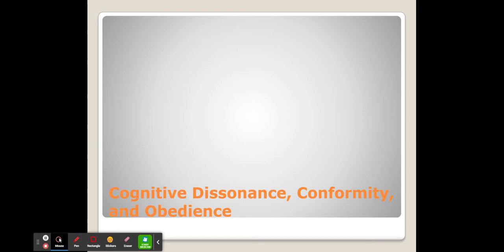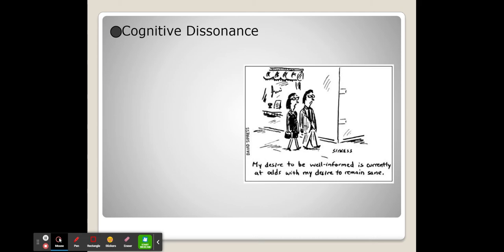Cognitive dissonance is when your actions and your beliefs don't align. Oftentimes this is due to your actions being influenced by other people. When we don't have that alignment between our actions and beliefs, we experience tension, and that's called cognitive dissonance. We work to eliminate that dissonance by either changing our actions or our beliefs.